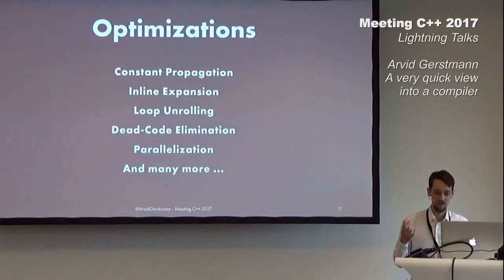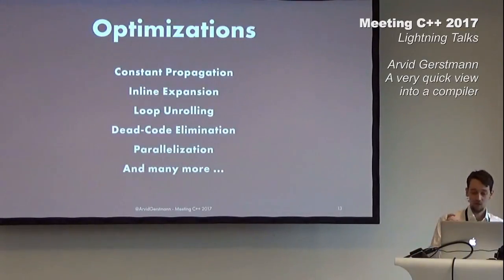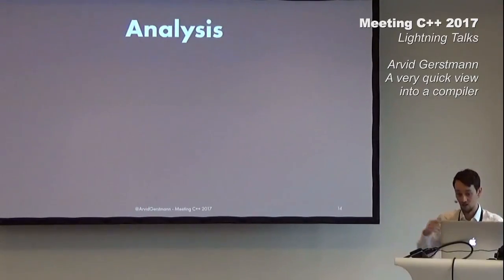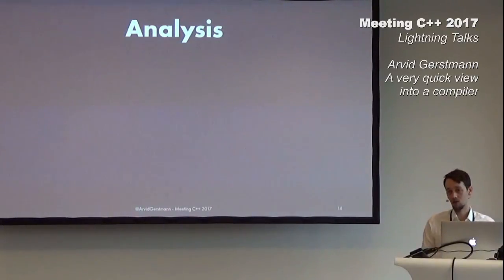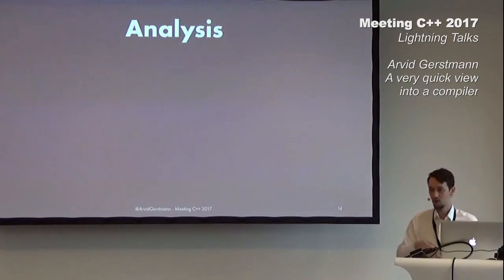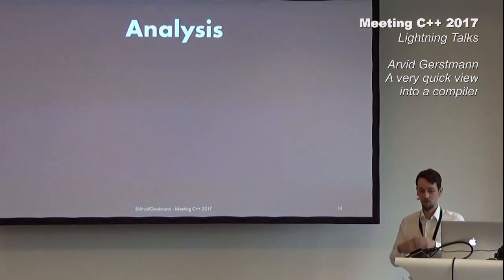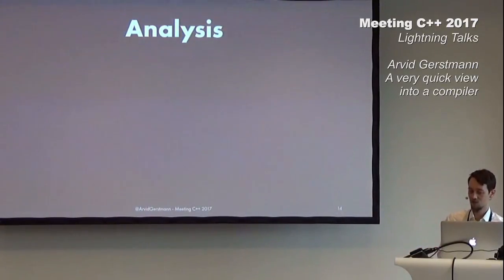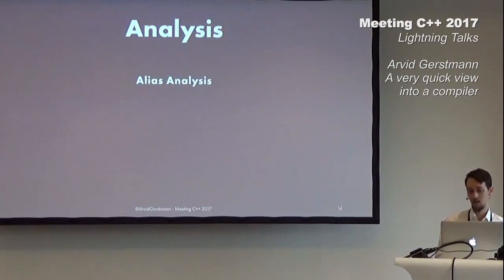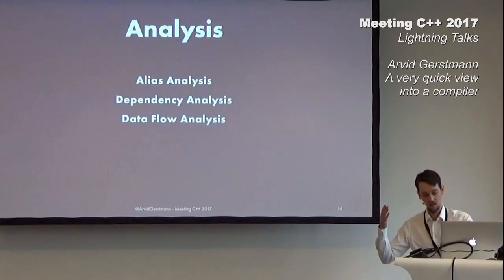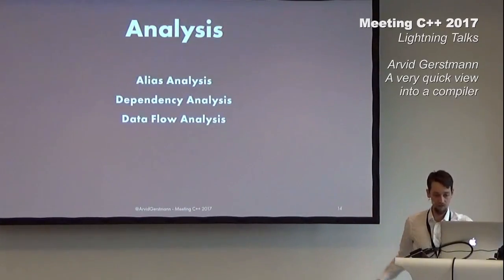The compiler has tens if not hundreds of these small optimizations. They are enabled by one critical component: the analysis. The analysis is crucial, since without thorough knowledge about the IR prior to applying optimizations, many optimizations would lack fundamental information and would not be possible. For example, to eliminate dead code in a branch, we have to be absolutely certain that branch will never be taken — which might even depend on previous optimizations like constant propagation. To do that, the compiler has several analysis passes, such as alias analysis, dependency analysis, and data flow analysis for constant propagation, among many more.